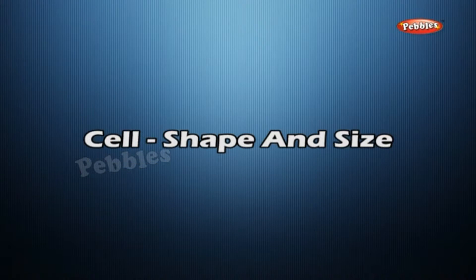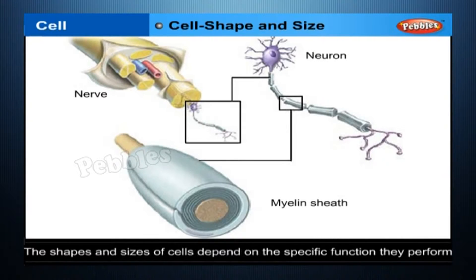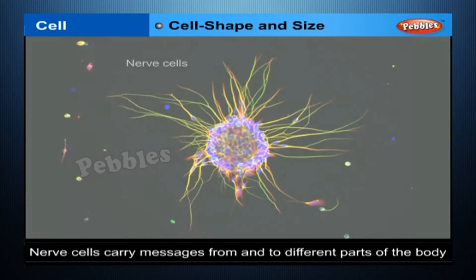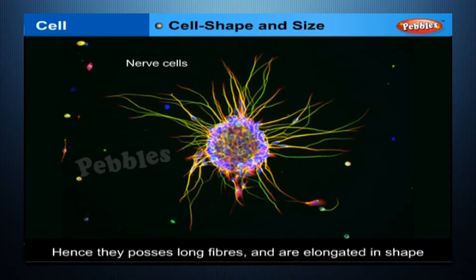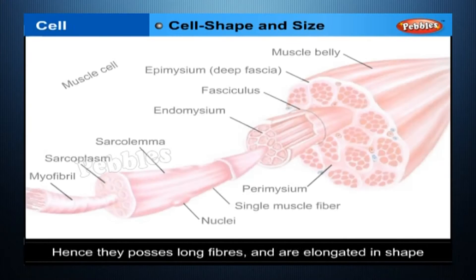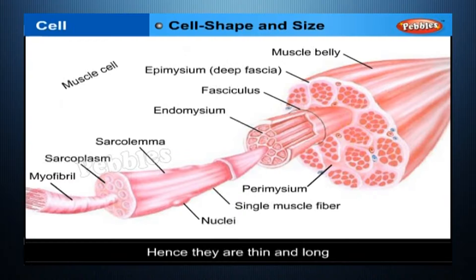Cell Shape and Size. There are different types of cells in a multicellular organism, each having a specific role to play. The shapes and sizes of cells depend on the specific function they perform. Nerve cells carry messages from and to different parts of the body; hence they possess long fibers and are elongated in shape. Muscle cells help in movement through contractions and expansions; hence they are thin and long. Skin cells cover a large area; hence they are flat in shape.